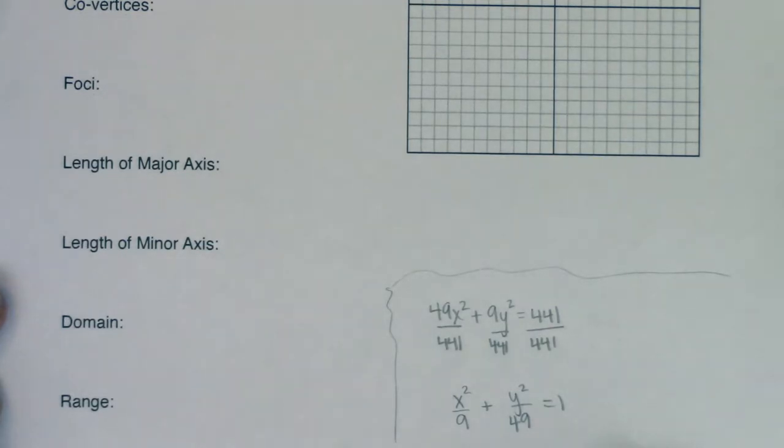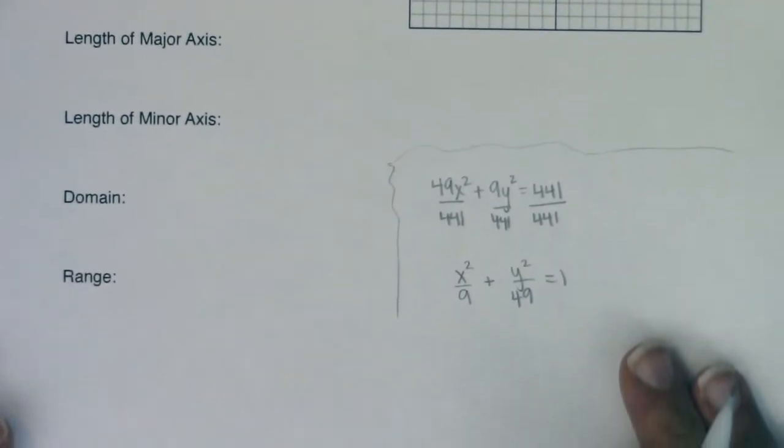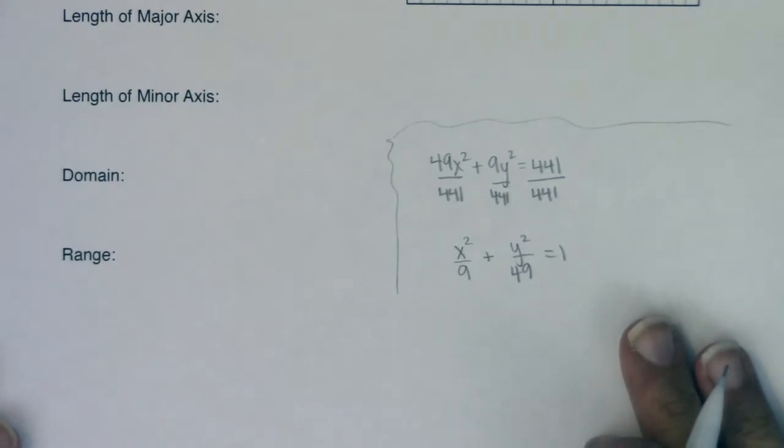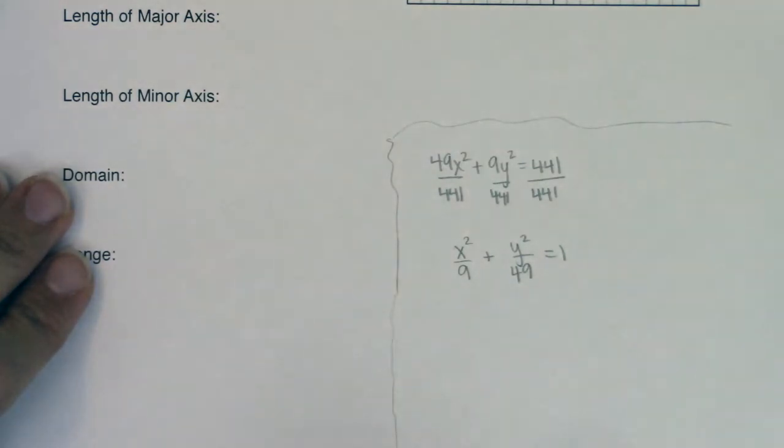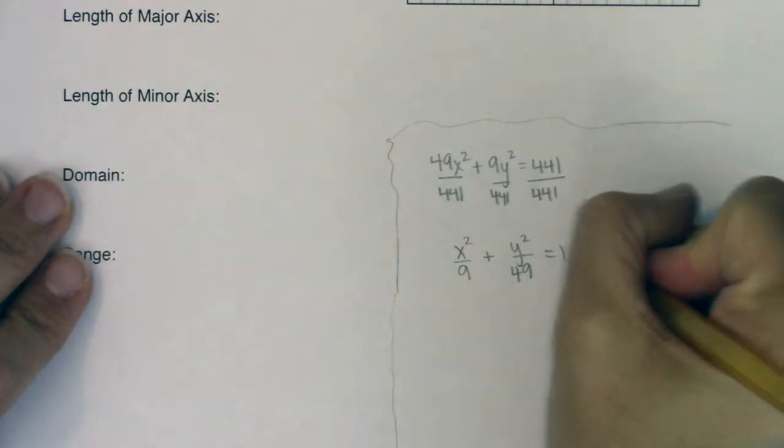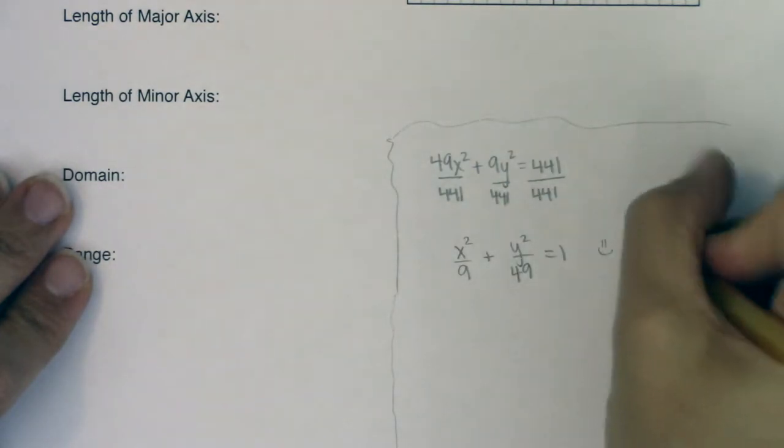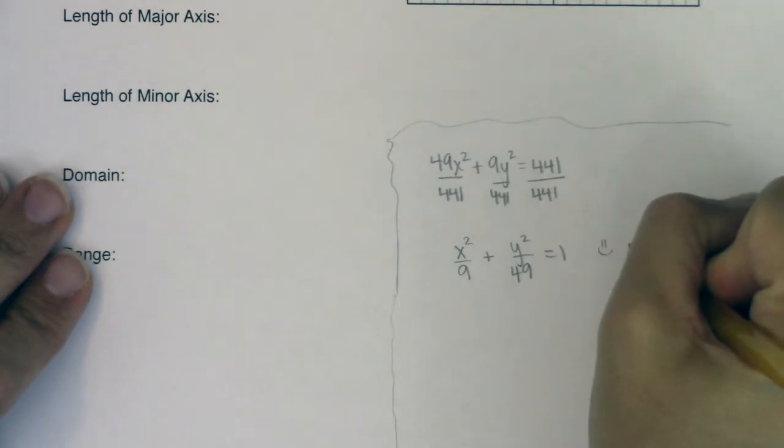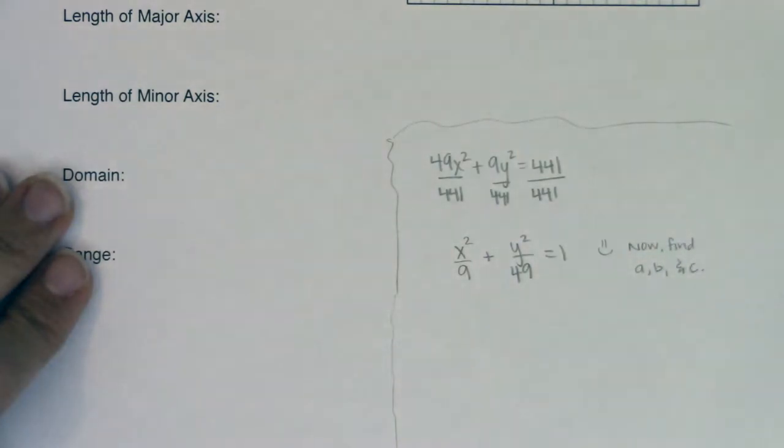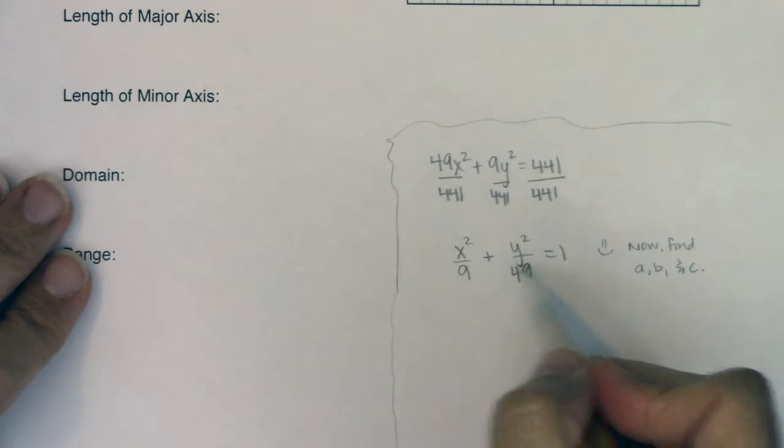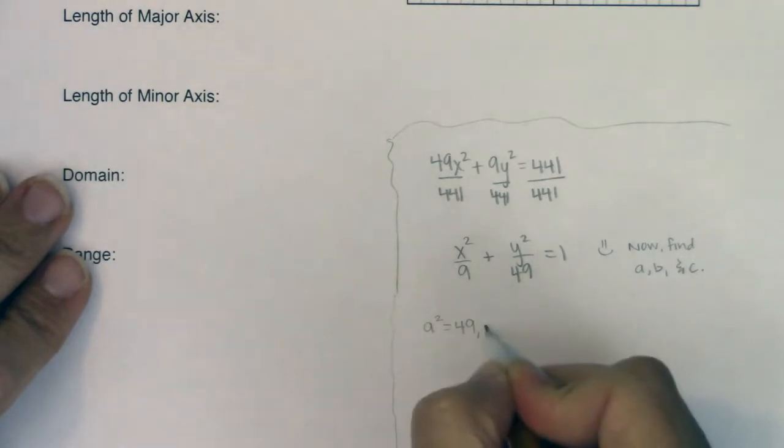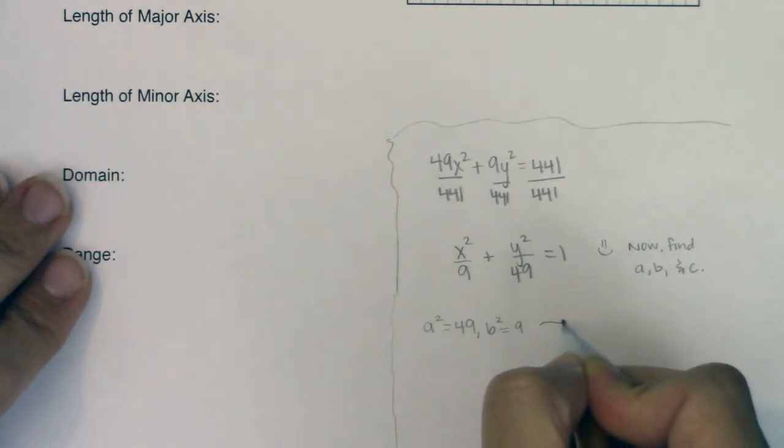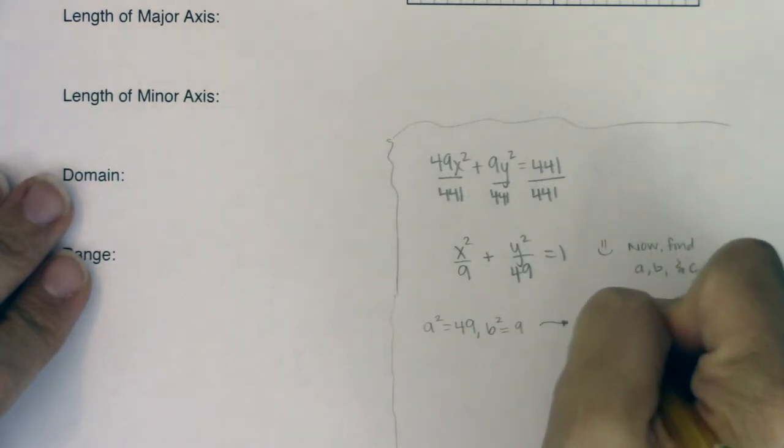Once you get this going, your next game plan is to find a, b, and c. So how do we pick those apart? Well, a is always associated with the larger of these two numbers. So I see right here a 49, so I know a squared is equal to 49, which means b squared must be equal to 9. So now I know a is 7 and b is 3.